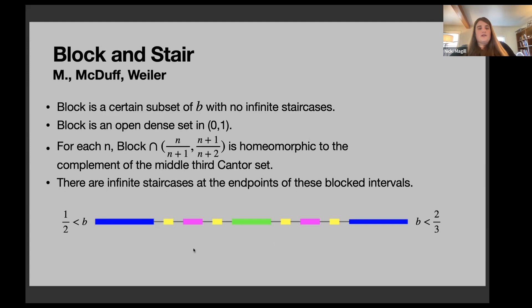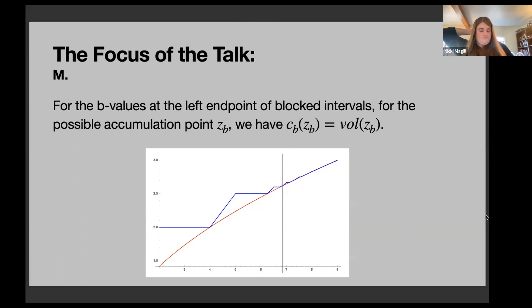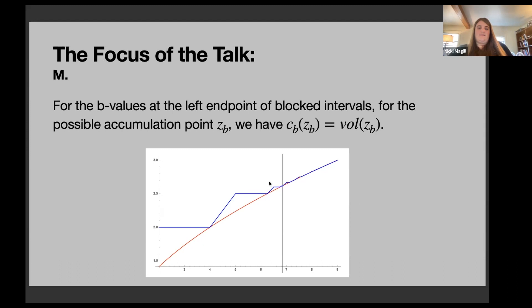For the rest of the talk, I'll give part of the proof that there are infinite staircases at the endpoints of these blocked intervals. This result says that for b values at the left endpoint of these intervals, we can determine, based on work of Cristofaro-Gardiner, Holm, Mandini, and Pires, what the accumulation point z(b) should be. We want to show that at z(b), the embedding function equals the volume obstruction — the blue and red lines meet — giving a full filling. This is part of the proof that we get infinite staircases at these b values.